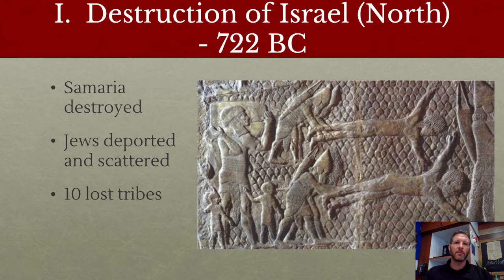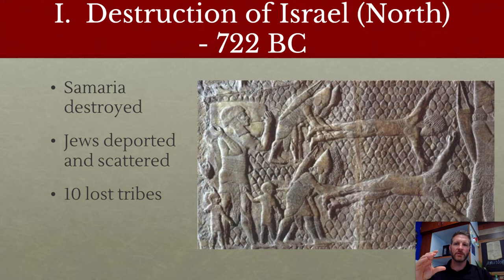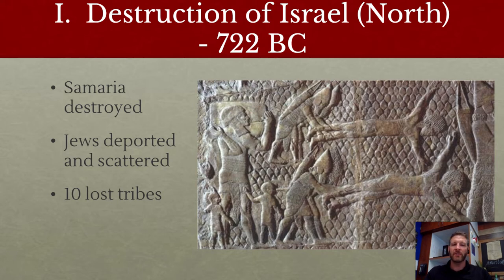In 722 BC, the northern part of Israel is destroyed. Israel was split in half after the reign of Solomon — ten tribes in the north were called Israel, sometimes called Samaria after their capital city, and the south was just two tribes, Judah and Benjamin. The kings of the north were more wicked than the kings of the south. Assyria comes in and conquers Samaria in 722, destroys their capital, and deports the Jews — destroying their Jewish heritage. They couldn't maintain the covenant, they had no temple, no tabernacle. They integrated and lost their identity, becoming known as the Ten Lost Tribes.